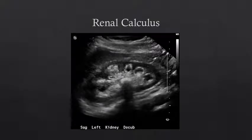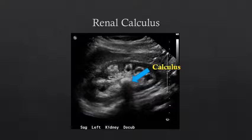Now let's take a look at calculi within the kidney. Here we can see a longitudinal image of the left kidney. We can see the outer hyperechoic cortex and the inner hyperechoic renal sinus fat. In the middle of the fat, we see a hyperechoic structure that is causing shadowing — that is the calculus. One difficulty with renal calculi compared to gallbladder calculi is that the renal sinus fat is hyperechoic and can sometimes obscure the hyperechogenicity of the renal calculus. Posterior acoustic shadowing is a key finding to differentiate a renal calculus from hyperechoic renal sinus fat.